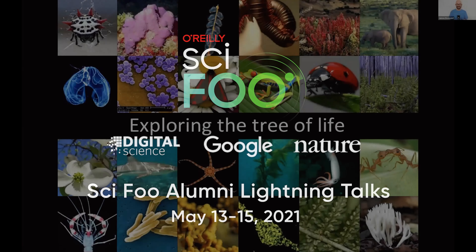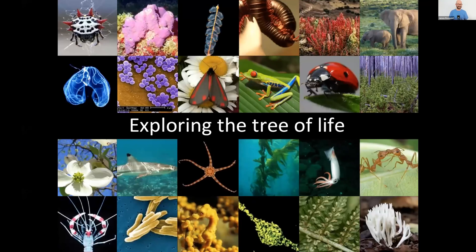Life on Earth is diverse and important. There are over two million different species known to science, and the Tree of Life shows us how they all evolved and how they all share common ancestors. It also gives us a rather nice indexing system for all life on Earth.